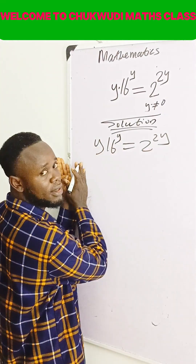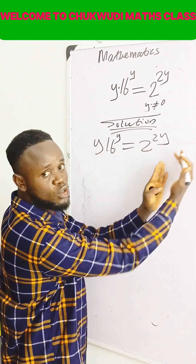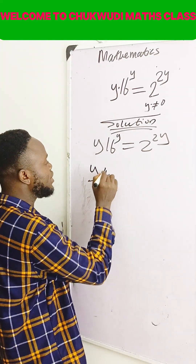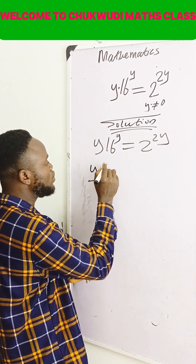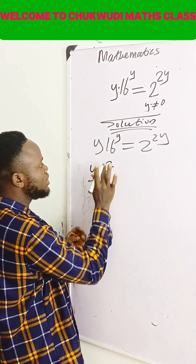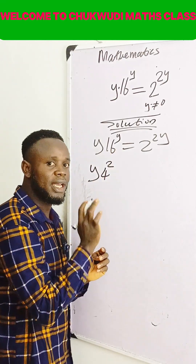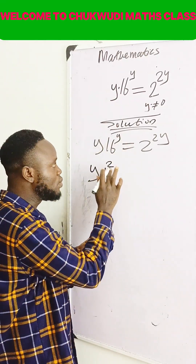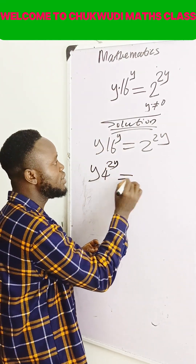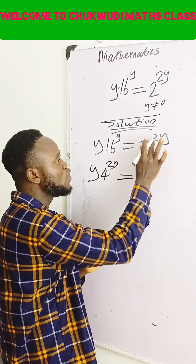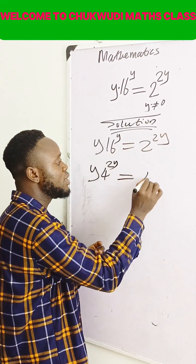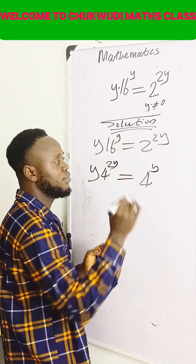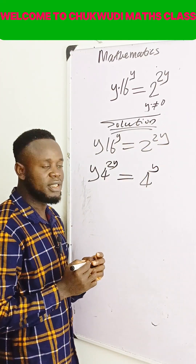Let me make the base of this side and this side to be equal. So I have y raised to the power 4 raised to the power 2. 16 is 4 raised to the power 2, and it has power y already. So 2 times y will give you 2y. This is equal to 2 raised to the power 2 is 4, and it has power y.